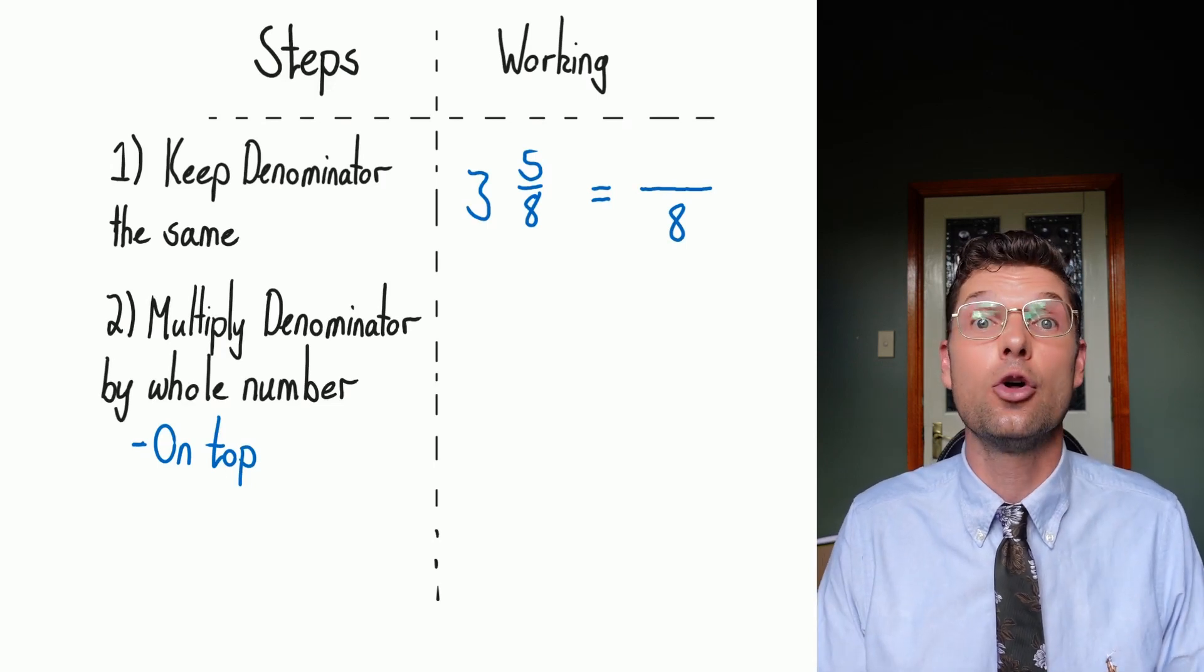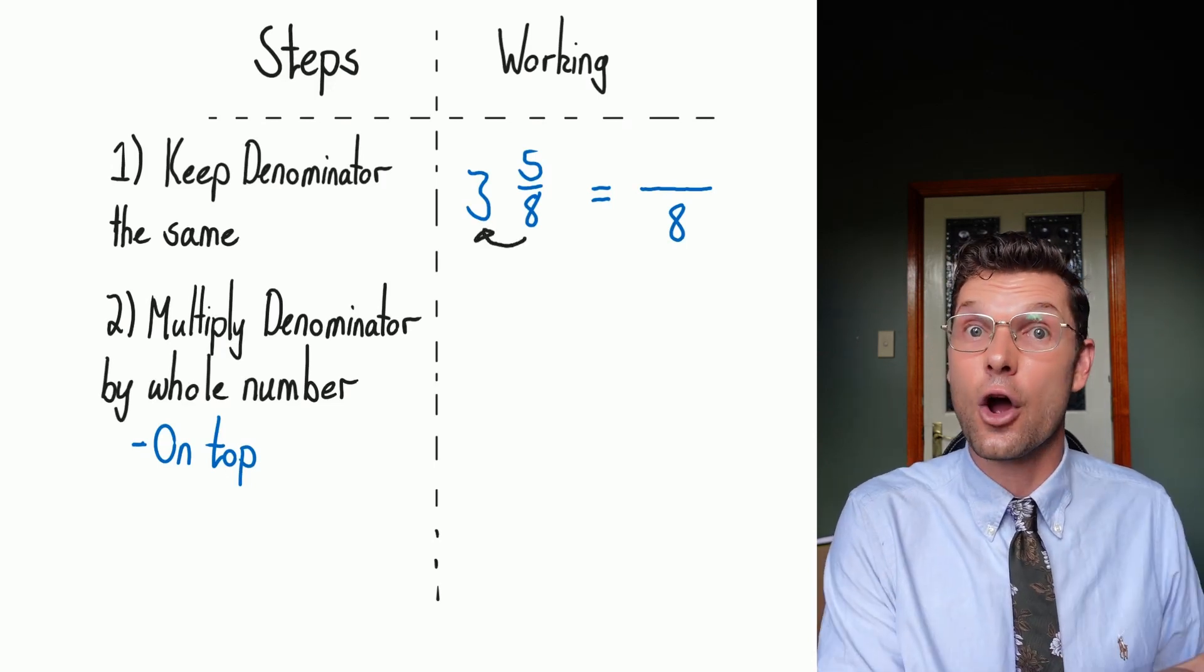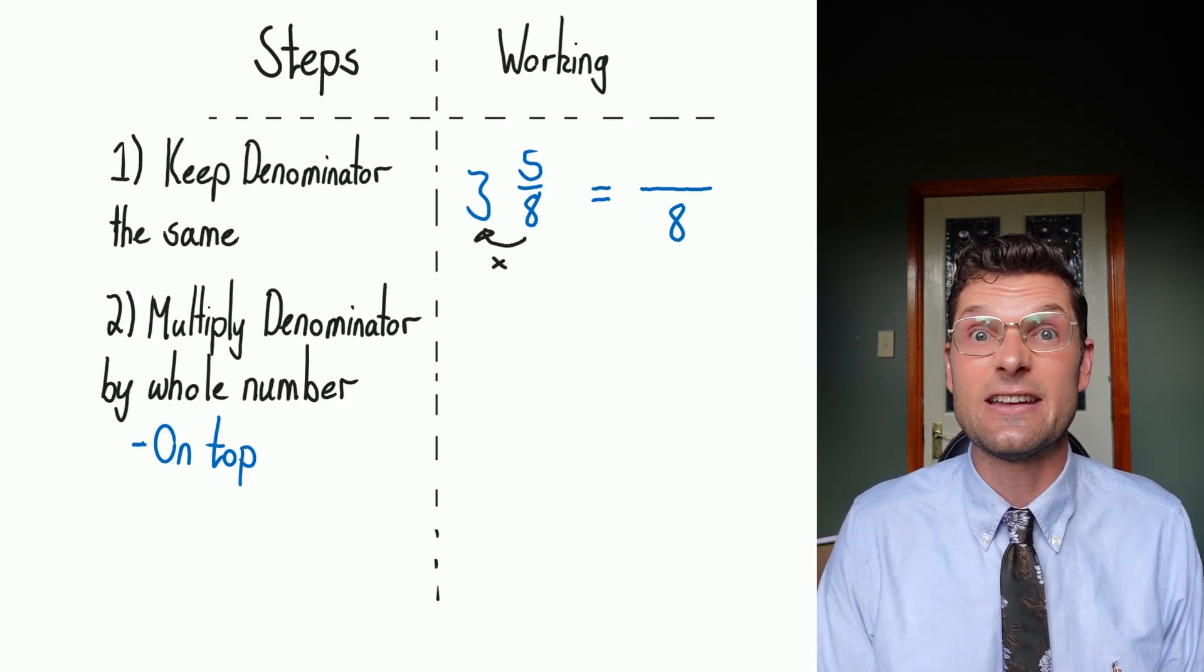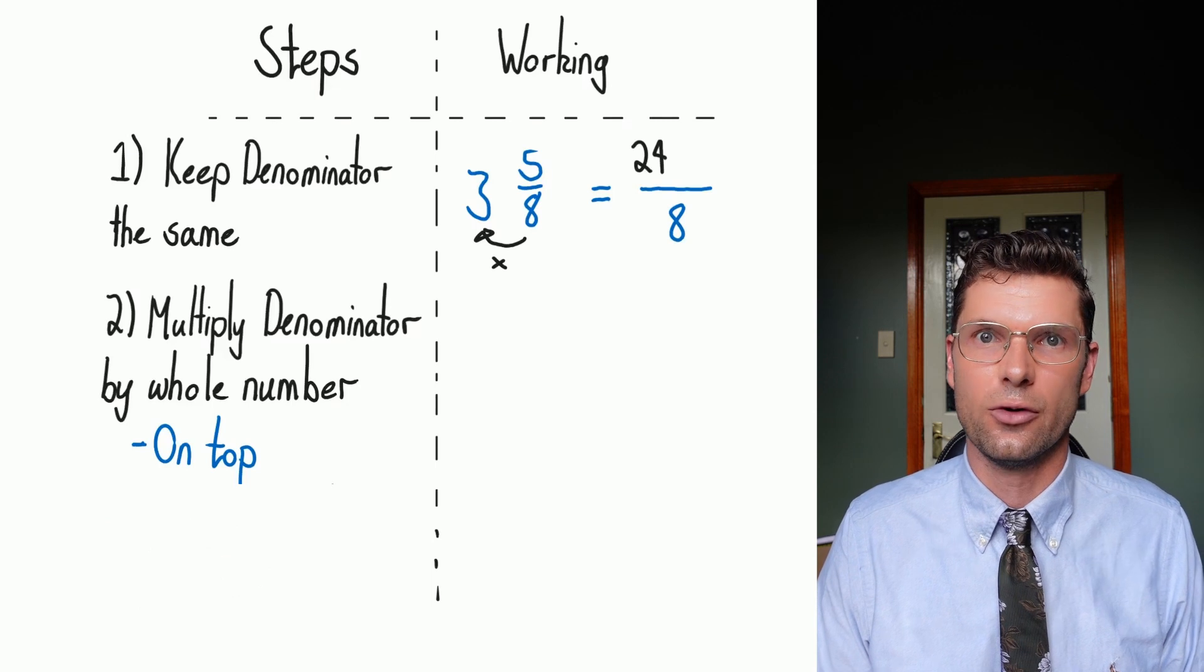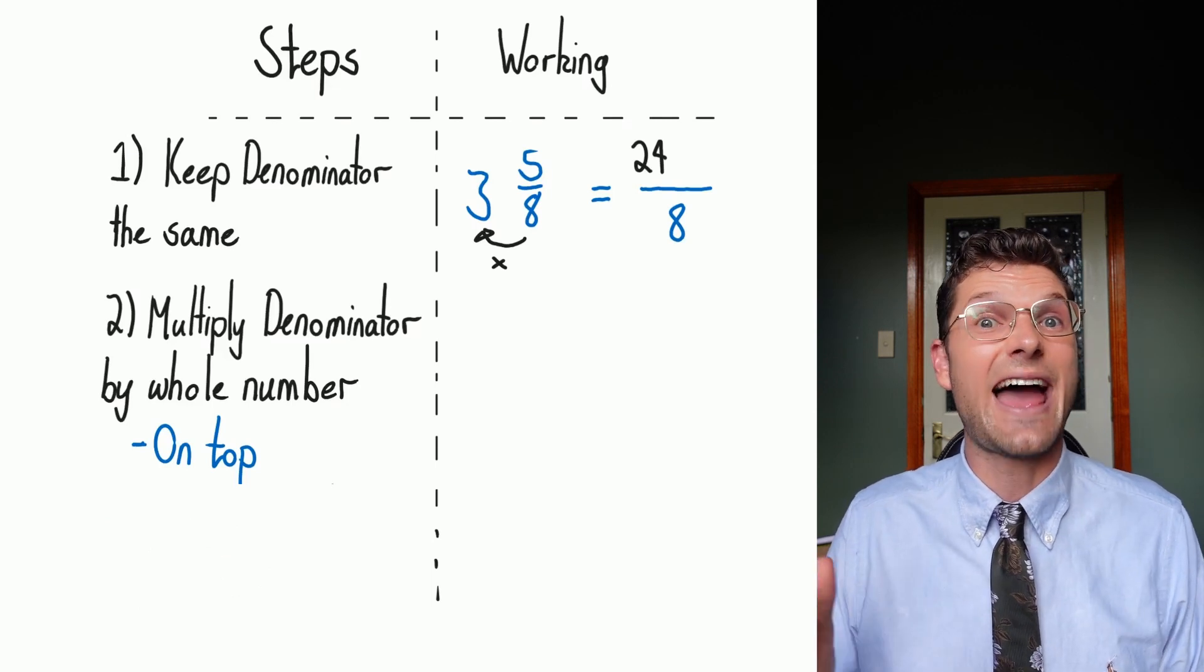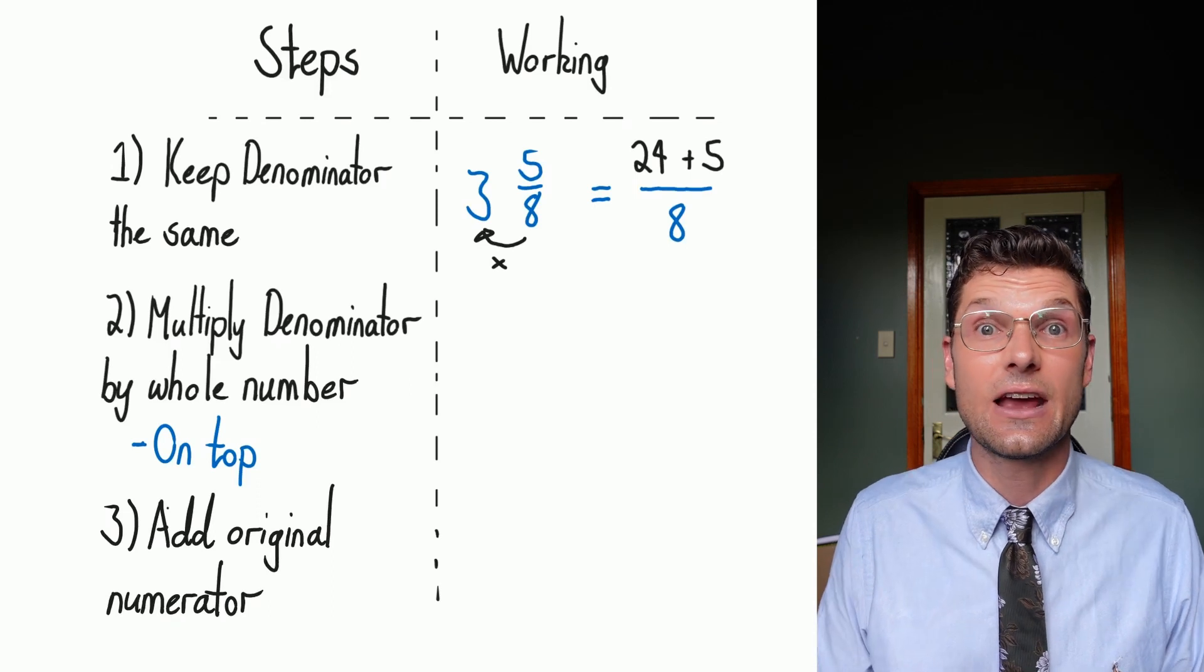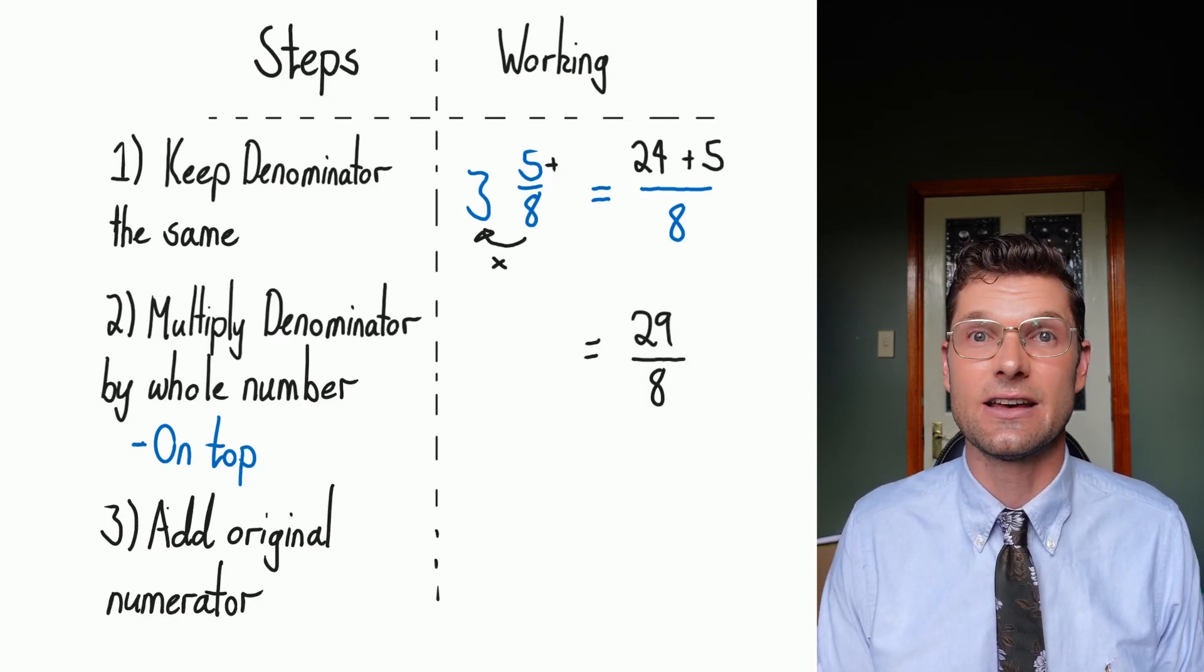Because what I've got is three full complements of eight over eight. So if you're thinking about sport, we're looking for teams of eight. I've got three full teams of eight and there is five people left over. So that means the full teams, I've got 24 people there. Then what I'm gonna do is add the remainder. So 24 plus that five. This becomes 29 over eight. And that's my final answer.